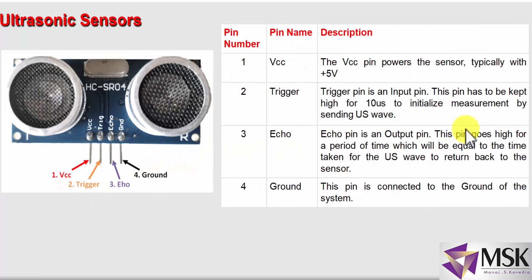Next is the ultrasonic sensor. This ultrasonic sensor is basically used to measure the distance between the sensor and an obstacle. It can be used for finding the distance, it can be used to find the water level in a tank, and many more applications. It has four pins — Vcc, Trigger, Echo, and Ground.